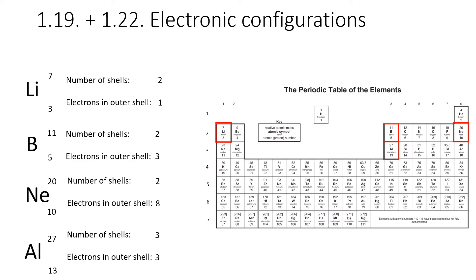You should be able to write down electronic configurations for each of these. For example, lithium is in period two so it has two shells, and it has one electron in the outer shell, so the first shell must be full with two electrons — giving a configuration of 2,1. For aluminium, it has three electrons in the outer shell and three shells in total, so the first shell has two, the middle shell has eight, and the outer shell has three — giving 2,8,3.